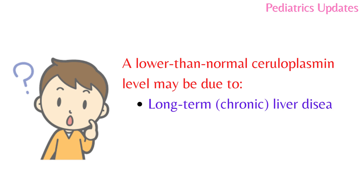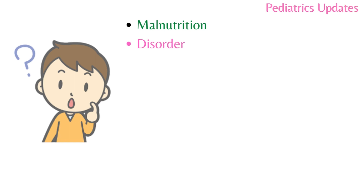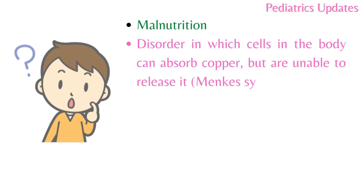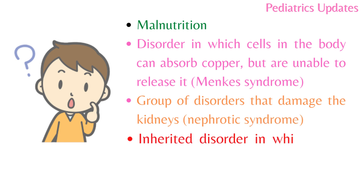A lower than normal ceruloplasmin level may be due to long-term chronic liver disease, problems absorbing nutrients from food, intestinal malabsorption and malnutrition, a disorder in which cells in the body can absorb copper but are unable to release it — that is Menkes syndrome — a group of disorders that damage the kidneys like nephrotic syndrome, and an inherited disorder in which there is too much copper in the body's tissues, like Wilson's disease.